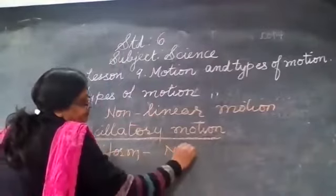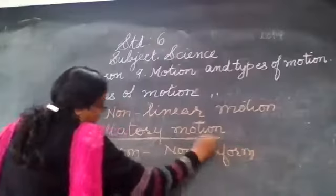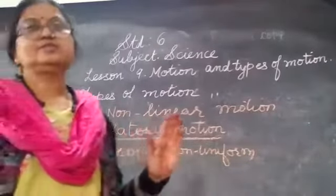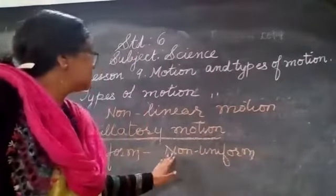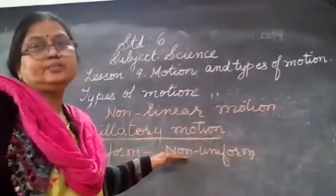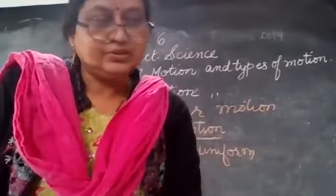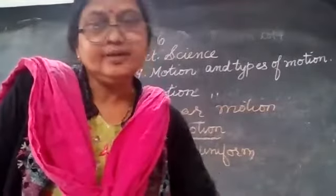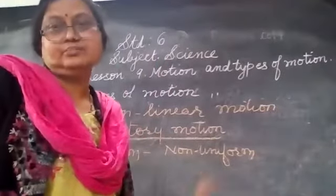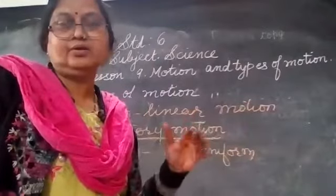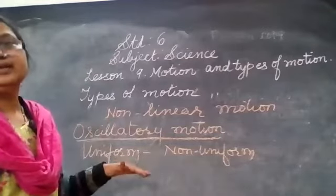Uniform means when the motion is always at the same speed at all points. When there is no uniformity — no similar speed — that motion is known as non-uniform motion. We have also learnt oscillatory motion; oscillatory means movement of a swing or pendulum, and those are the best examples for oscillatory motion.